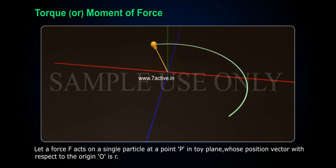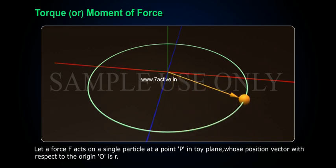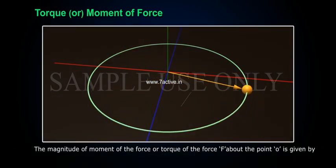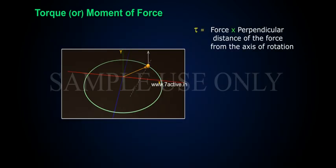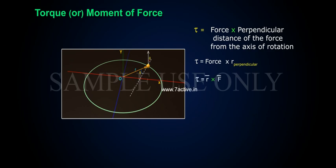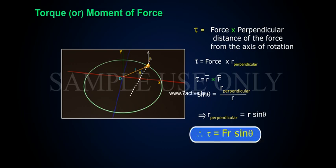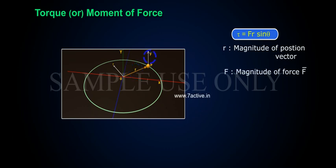Let a force F act on a single particle at a point P in the XY plane, whose position vector with respect to the origin O is R. The magnitude of the moment of force or torque of the force F about point O is given by: tau equals force into perpendicular distance from the axis of rotation, that is tau equals F times R_perpendicular. Since sin theta equals R_perpendicular divided by R, we get R_perpendicular equals R sin theta. Therefore, tau equals F R sin theta.